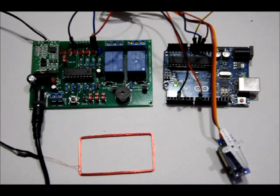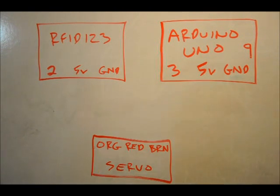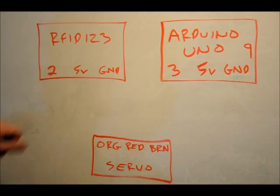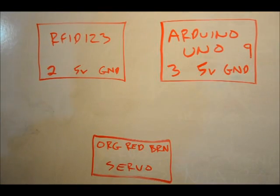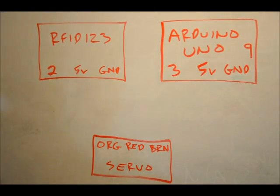And right now what I'm going to do is I'm going to show you how to hook all this up. Pardon the crude drawing. I've only got two colors of markers right now. So I'm going to use red to discuss the blocks. Servo motor, RFID123, and Arduino Uno. And I'm going to use blue to make the connections.